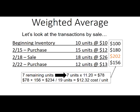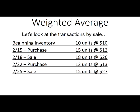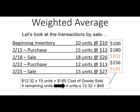Keep in mind: if you make a rounding error and end up with a crazy number — like $32 per unit — that's a signal to step back and double-check your work. The average you calculate should always make intuitive sense given your input costs. So I sold 15 units, meaning the cost of goods sold for the sale on the 25th is $185 — that's $12.32 times 15. Four remaining units at $12.32 gives us $49 in ending inventory.